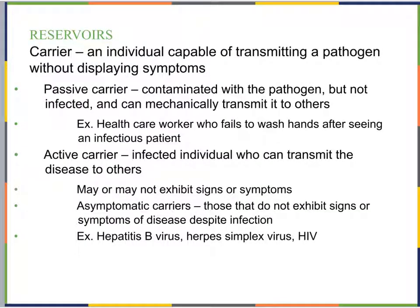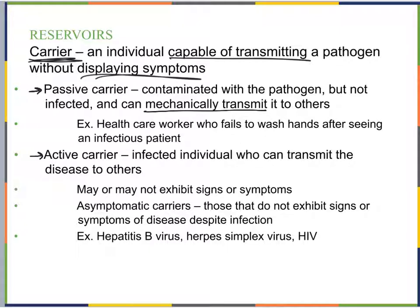Within living reservoirs we have carriers. A carrier is an individual capable of transmitting a pathogen but does not display symptoms themselves — they are asymptomatic. There are two types: a passive carrier is one that is contaminated with the pathogen but not infected. They can mechanically transmit it to others, for example a healthcare worker who fails to wash hands after seeing an infectious patient and then passes it to another patient.